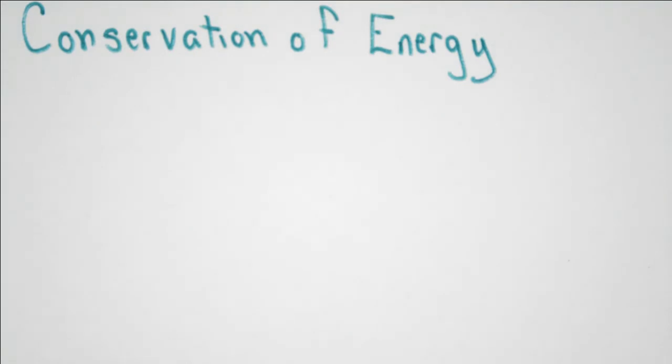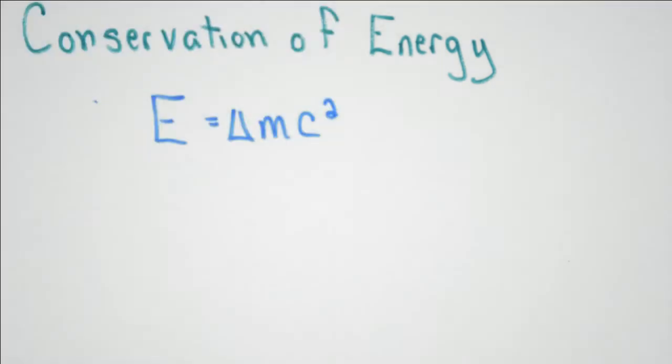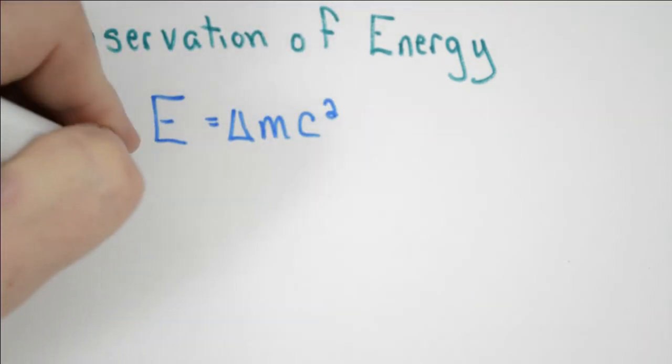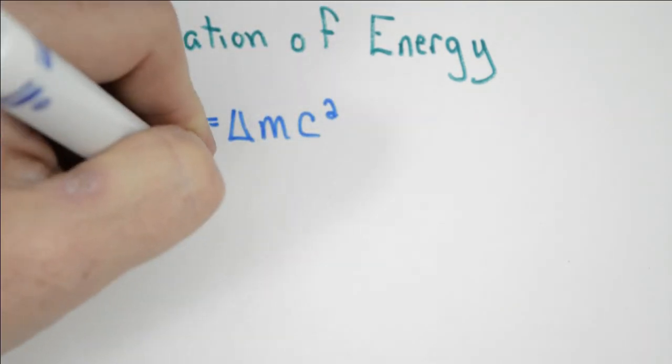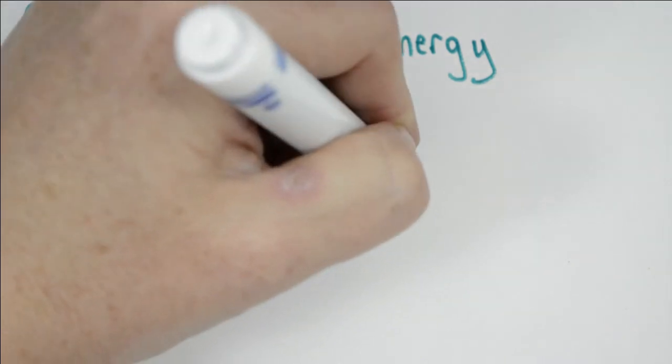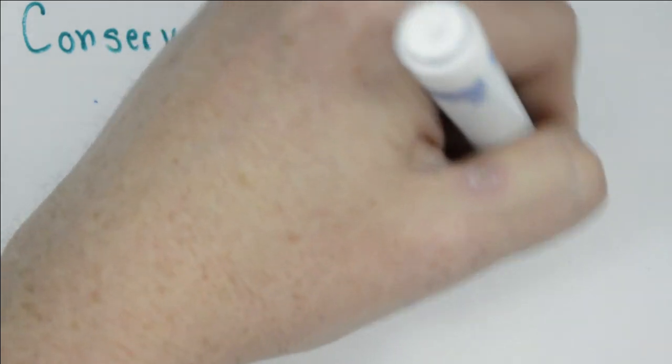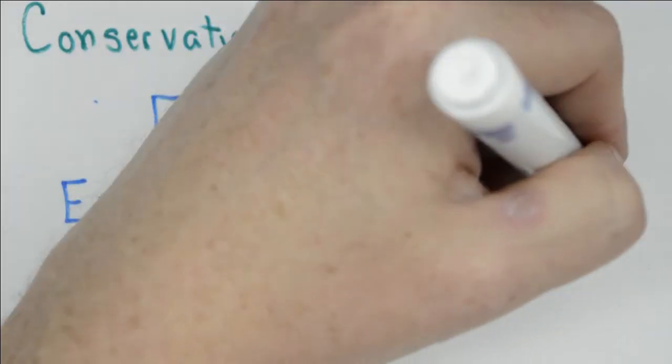And when it comes to the conservation of energy, it is now time to consider Einstein's famous equation that E is equal to mc squared. That is, energy and mass are the same thing. You can convert energy to mass and mass to energy. In this case, we've lost a little bit of mass. So if we consider the amount of mass that's been lost, we're going to be able to calculate how much energy should have been released by the loss of that mass.